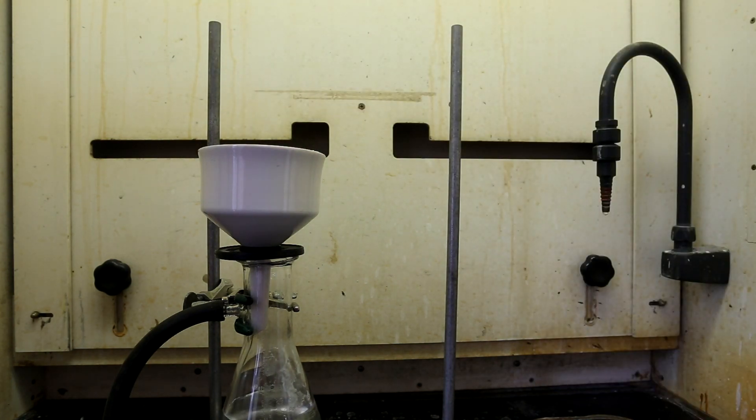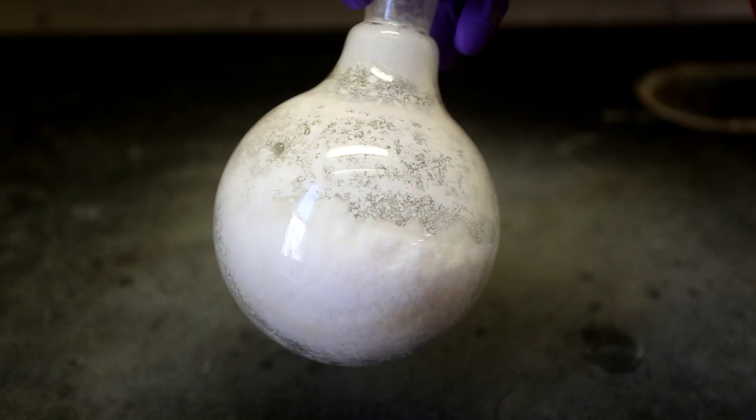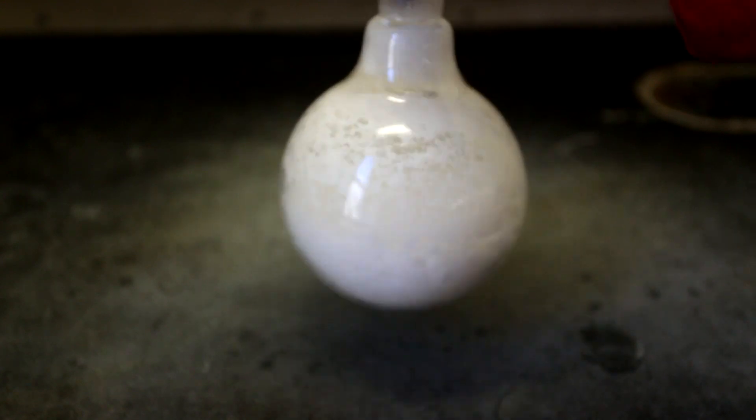I had access to a rotovap, so I transferred the solution to a round bottom flask and evaporated all of the acetone. This is the final product after drying in an oven overnight. The final yield was 94%.